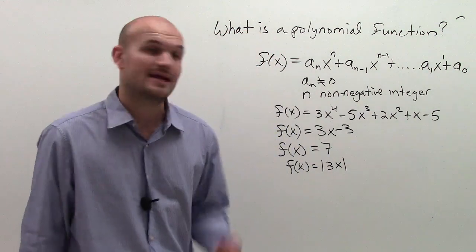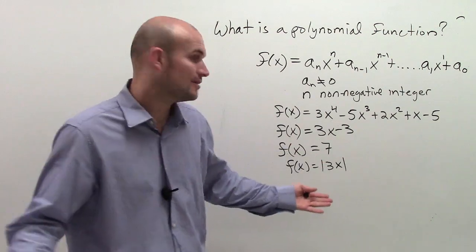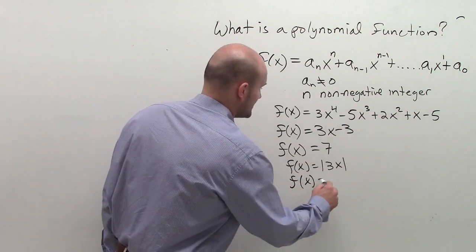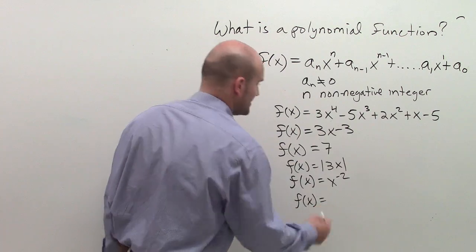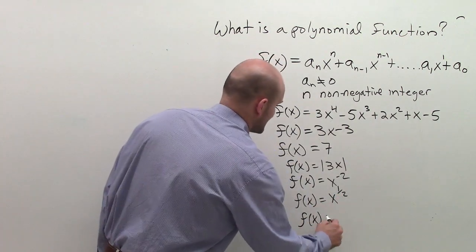That is not a function, because it's an absolute value function, and it doesn't follow through our definition. f(x) equals x^(-2). And f(x) equals x^(1/2). And f(x) equals 0.